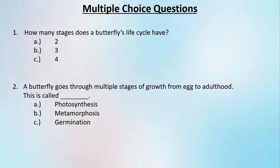Moving on to the question round. Question number one: how many stages does a butterfly's life cycle have? You can pause the video and solve it by yourself. The correct answer is four. Question number two: a butterfly goes through multiple stages of growth from egg to adulthood — this is called? The correct answer is metamorphosis.